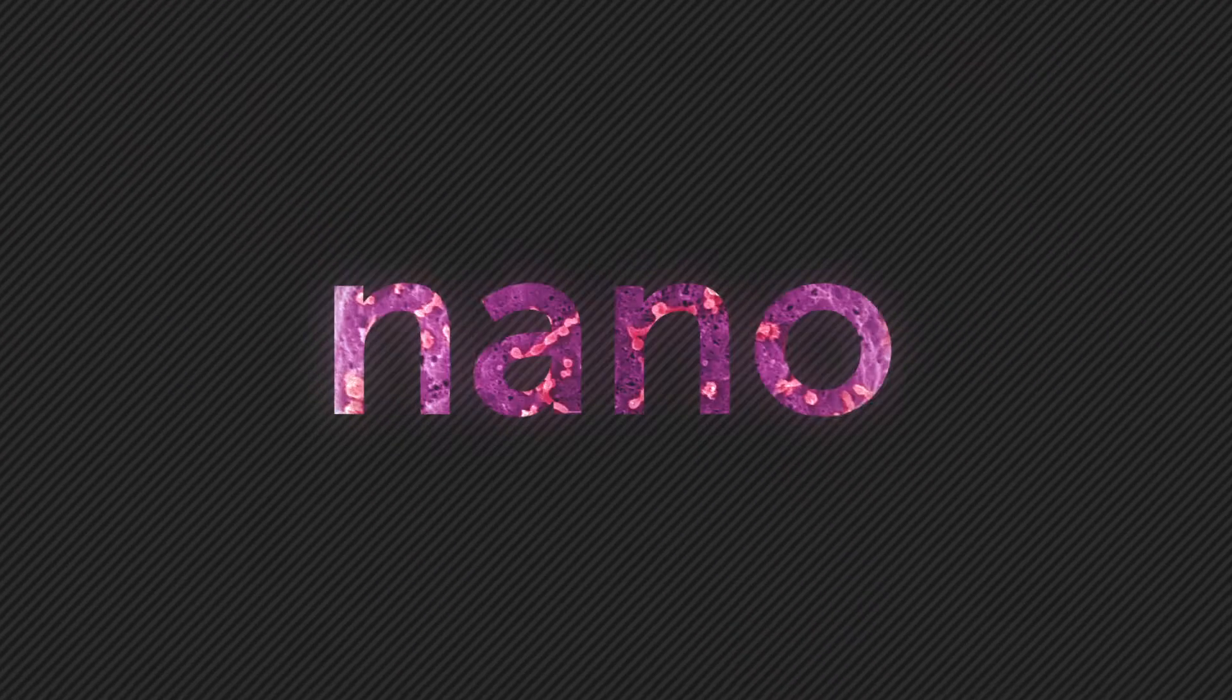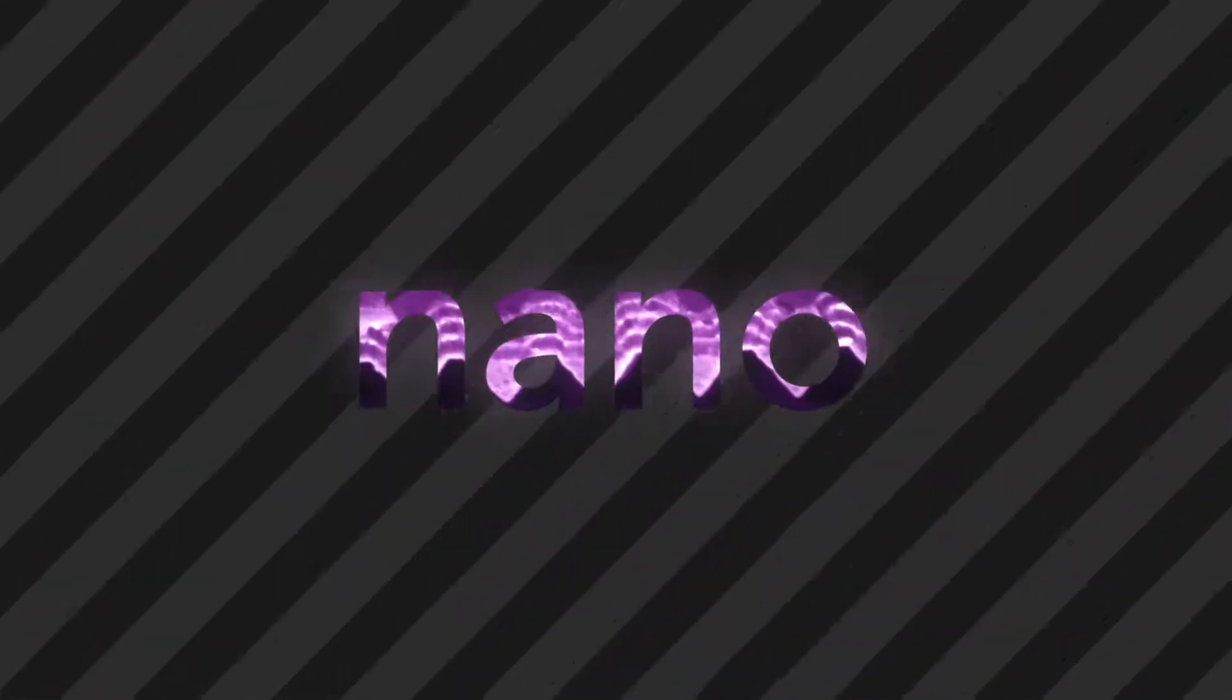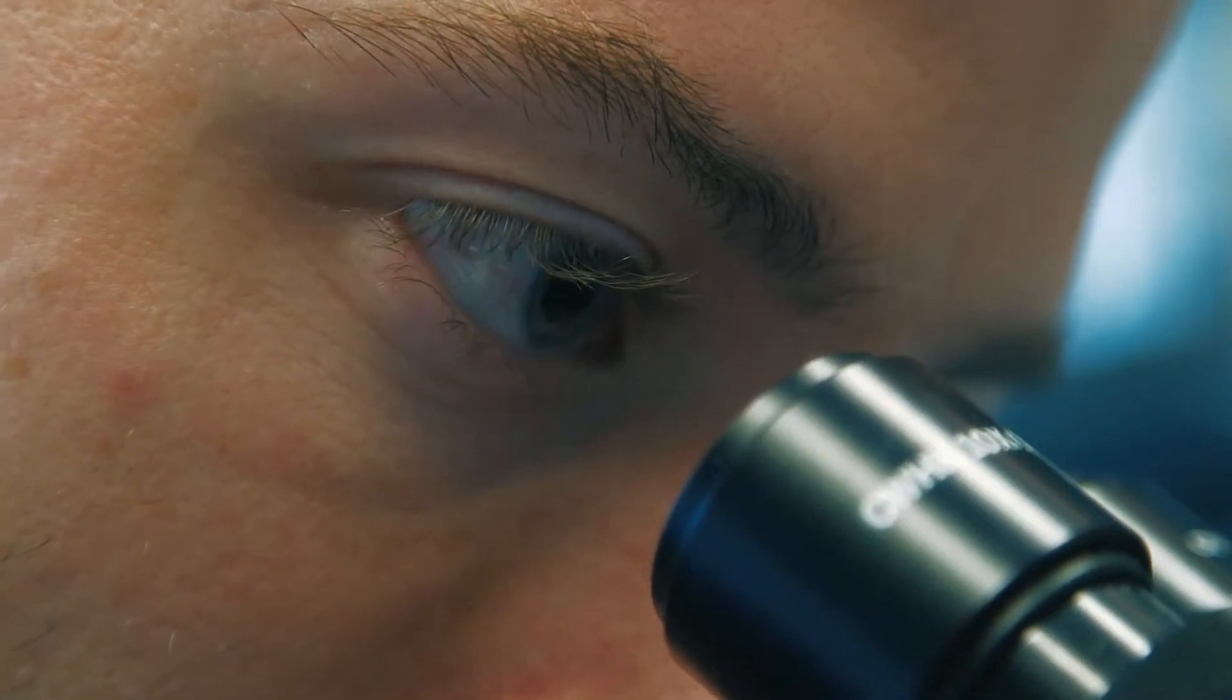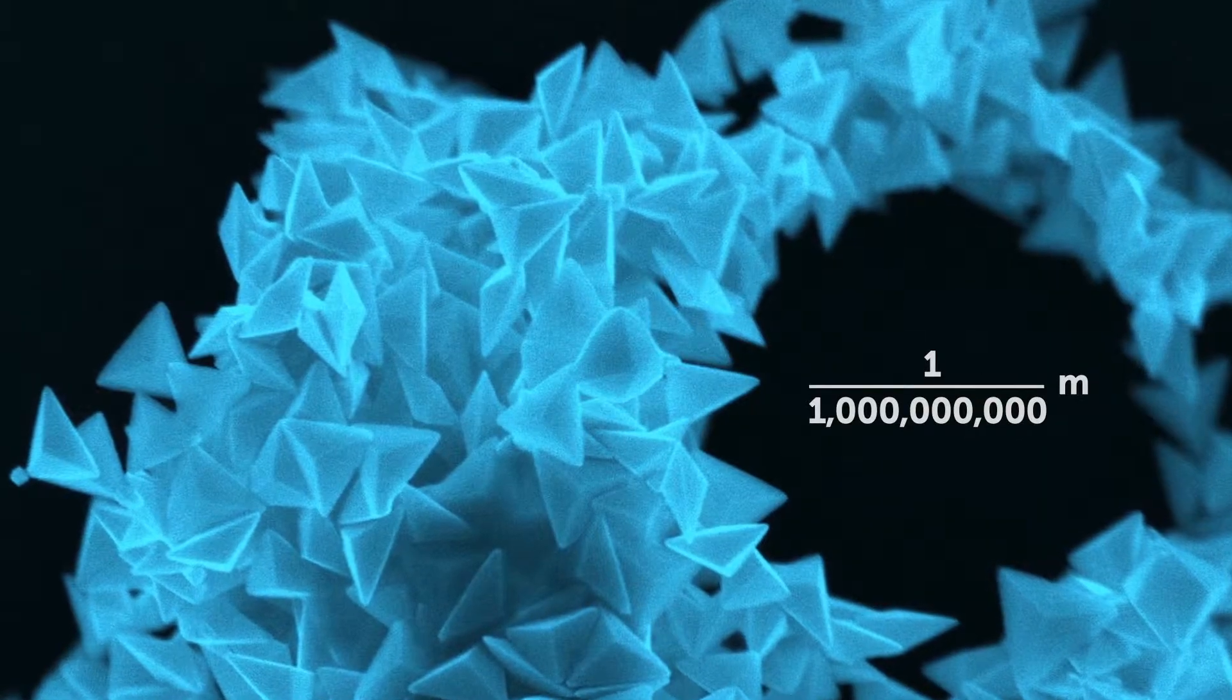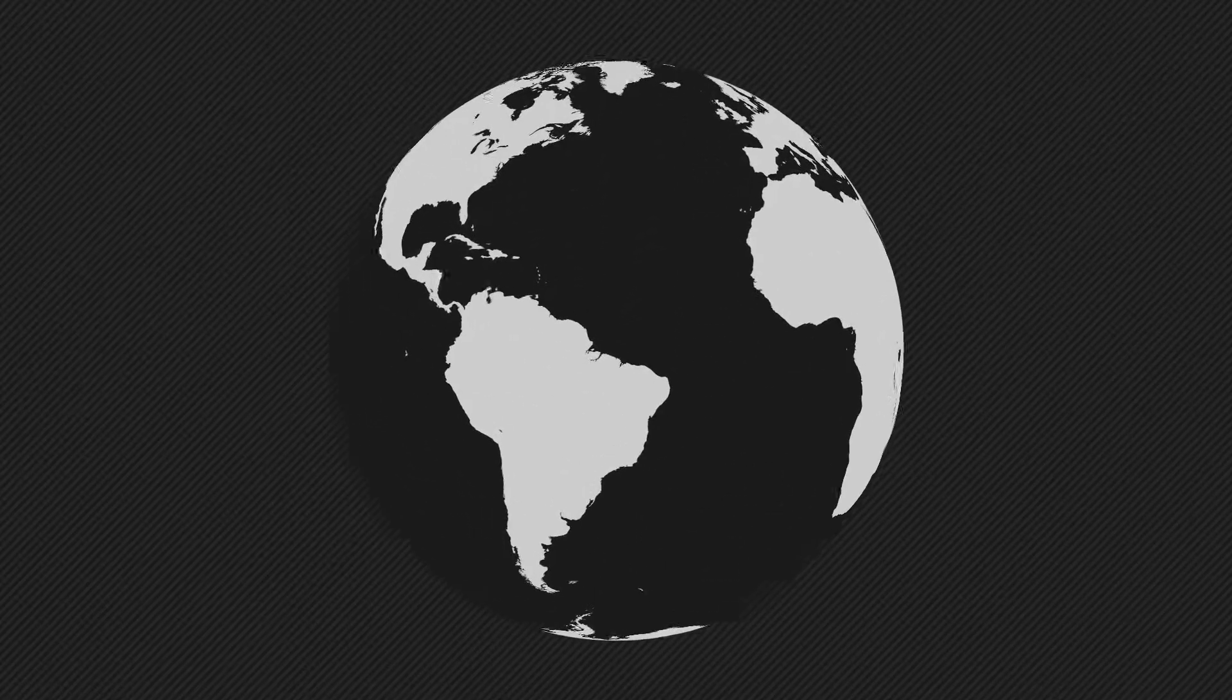So, nano meets small. But it's really hard to appreciate how small nano is. You can't see it with a naked eye. You can't even see it with a light microscope. A nanometer is one billionth of a meter. If you take the size of the Earth, one billionth would be a marble.